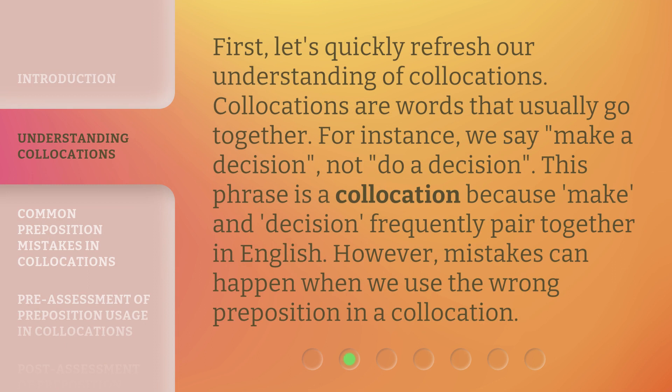First, let's quickly refresh our understanding of collocations. Collocations are words that usually go together. For instance, we say 'make a decision,' not 'do a decision.' This phrase is a collocation because 'make' and 'decision' frequently pair together in English.